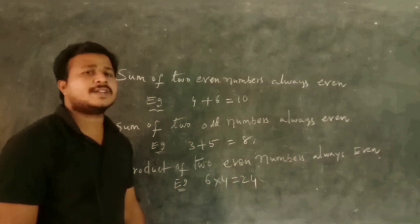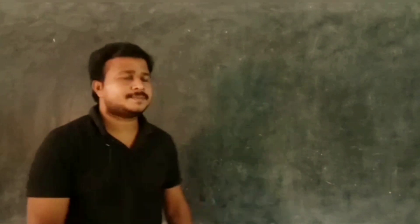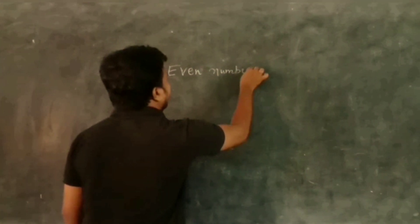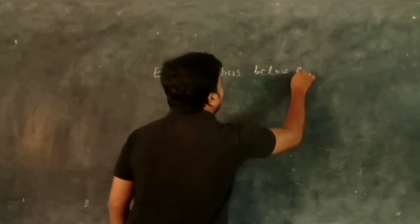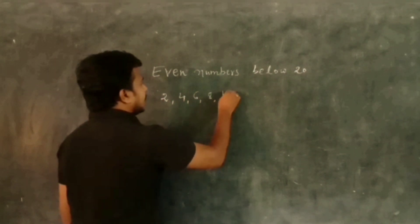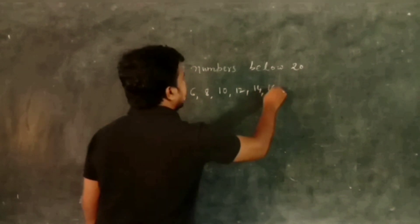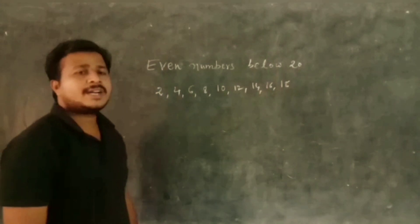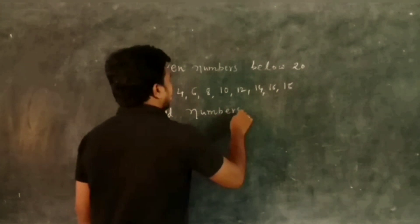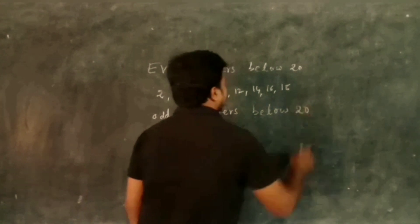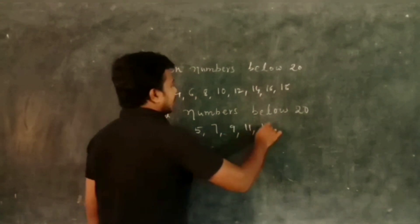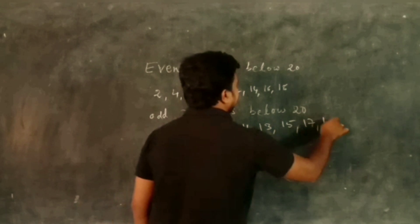Even numbers below 20: 2, 4, 6, 8, 10, 12, 14, 16, 18. Odd numbers below 20: 1, 3, 5, 7, 9, 11, 13, 15, 17, 19.